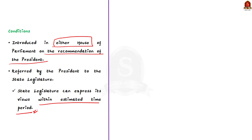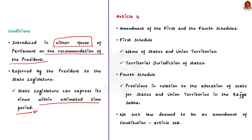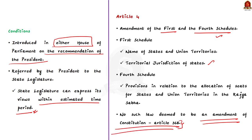Moving on to Article 4. Article 4 says that laws made under Articles 2 and 3 provide for the amendment of the First and the Fourth Schedules. The First Schedule talks about the names of the states and union territories, including the territorial jurisdiction of the states. The Fourth Schedule talks about the provision relating to the allocation of seats for states and union territories in Rajya Sabha. Article 4 also mentions that no such law under Articles 2 and 3 shall be deemed to be an amendment of the Constitution for the purpose of Article 368.